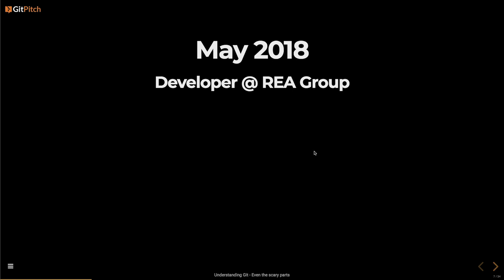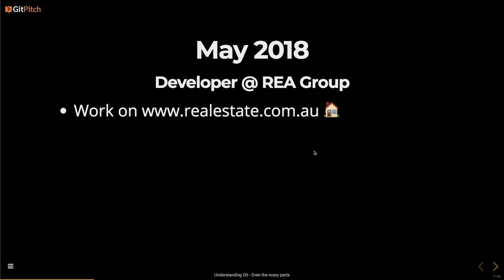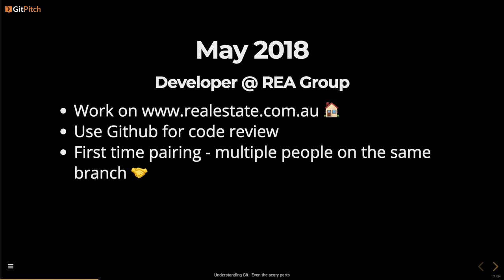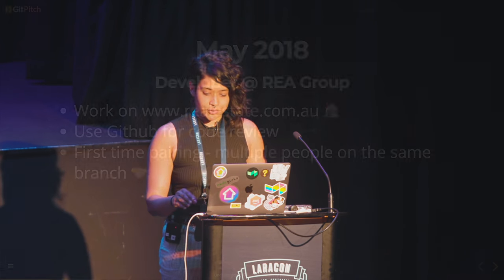This year I started at REA Group in Melbourne and work on the front end of realestate.com.au. We use GitHub for code review, and now that I know the best practices, I know what to do and what not to do with multiple commits. When we merge into master, we rebase rather than have merge commits as well. So I have to get very comfortable with rebasing because we have a lot of people working on this project. This is also the first time I've done pair programming — now we have at least a couple of people working on the same branch, so I have to really use Git for the purposes of collaboration.